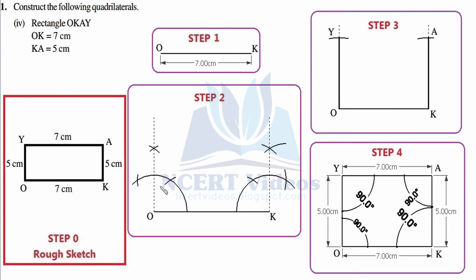The dotted line is used because this is not the final line segment — it is just the direction of 90 degrees. This completes Step 2. In Step 3, we find the actual measurement of the side, which is 5 centimeters on both sides. We readjust the compasses to a distance of 5 centimeters. The reason for using compasses rather than a ruler directly is that compasses give us an exact point, whereas using a ruler alone can sometimes result in measurement errors.